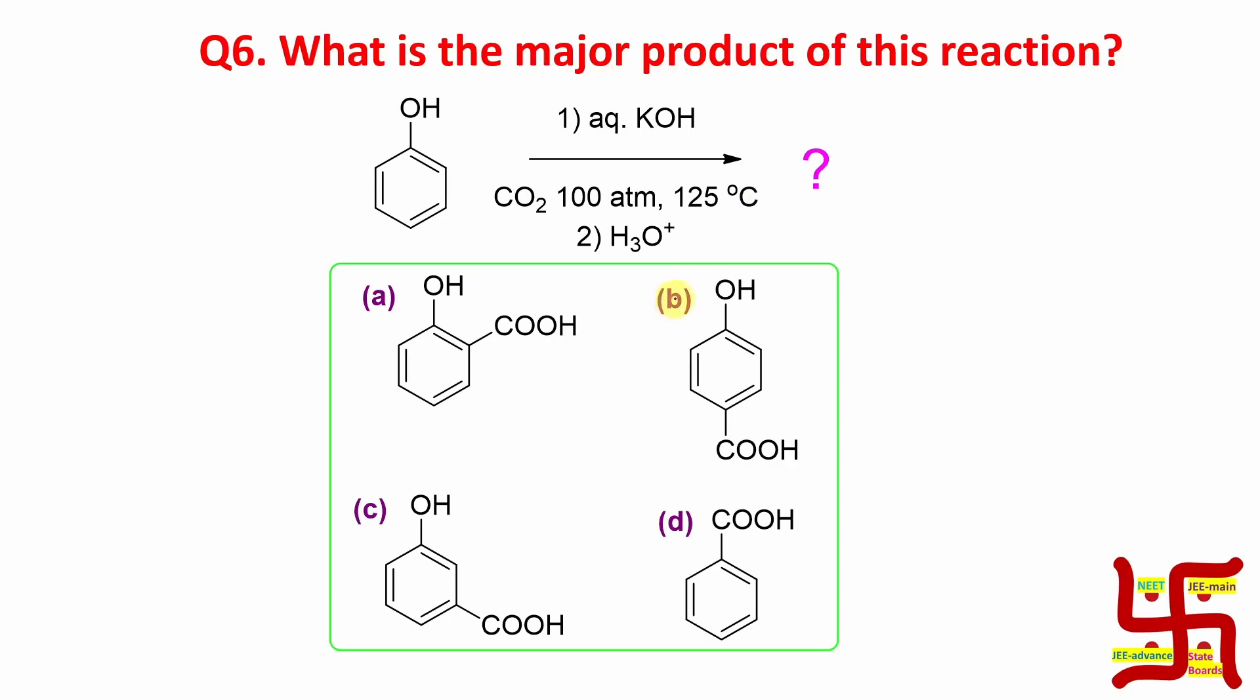Question: What is the major product of this reaction? It is actually two steps, sometimes it is written as three steps. This is one, this is two, this is three. Both are correct, doesn't matter. So what happens here, what is the product? Let's learn one thing.